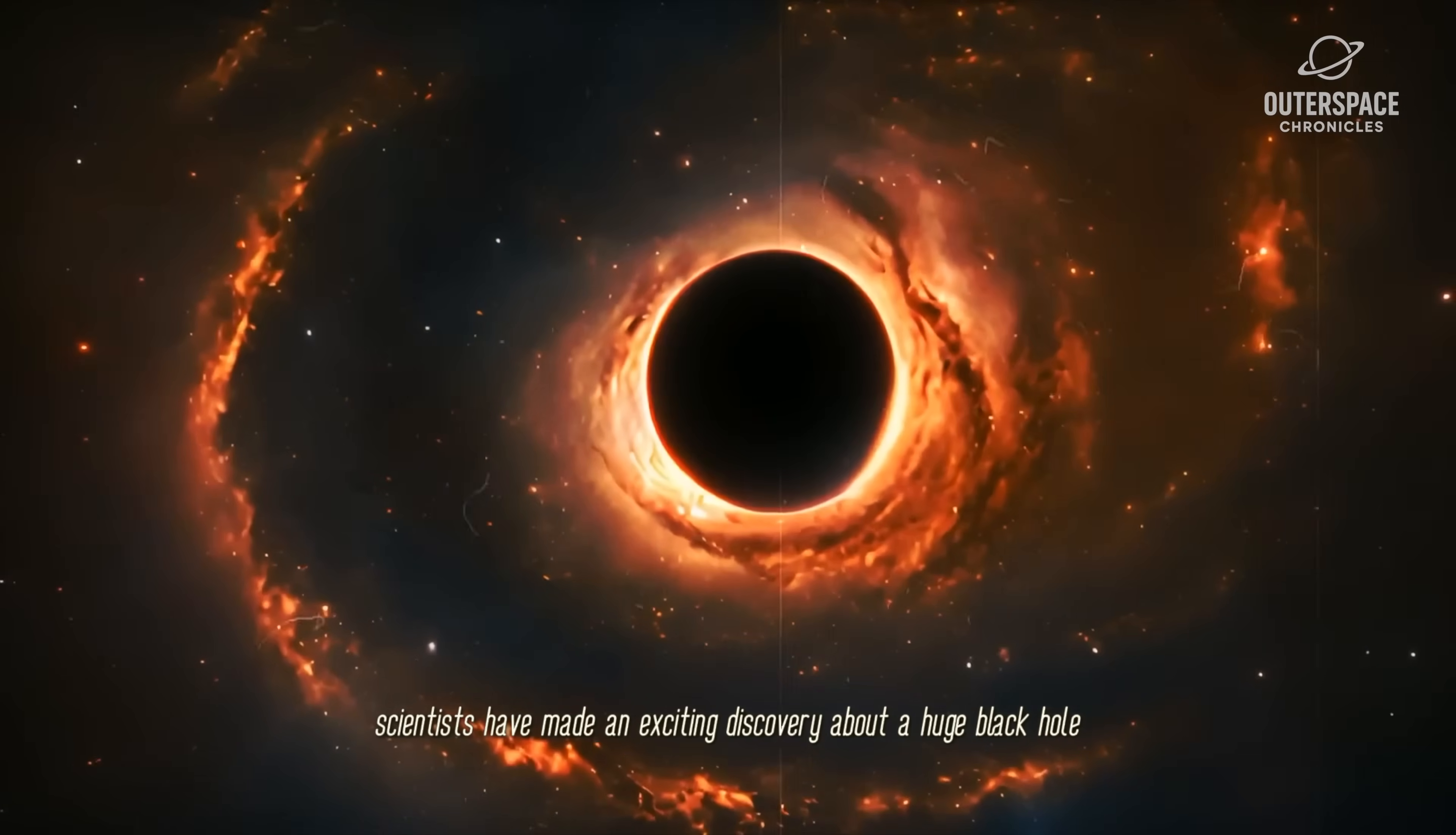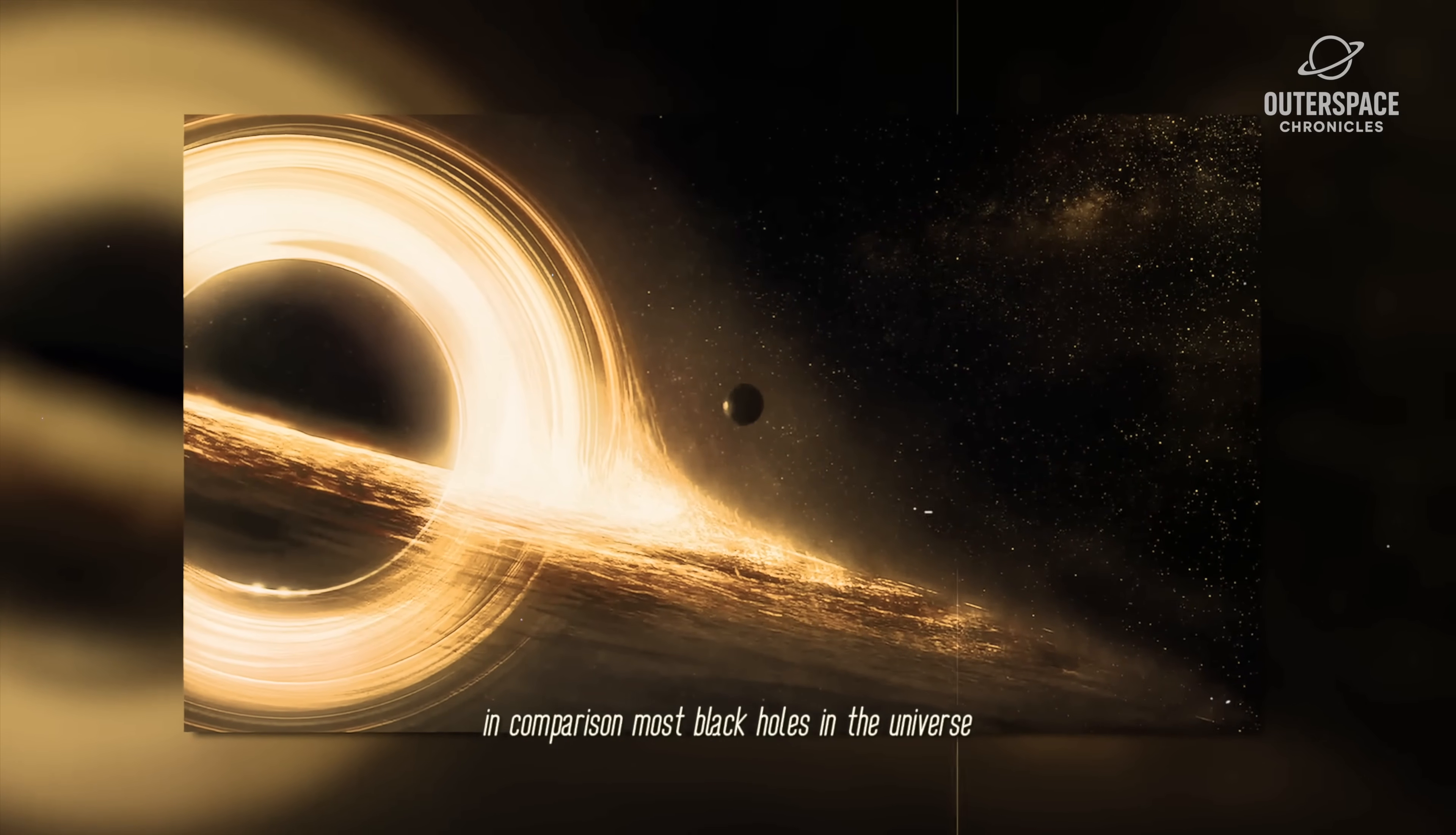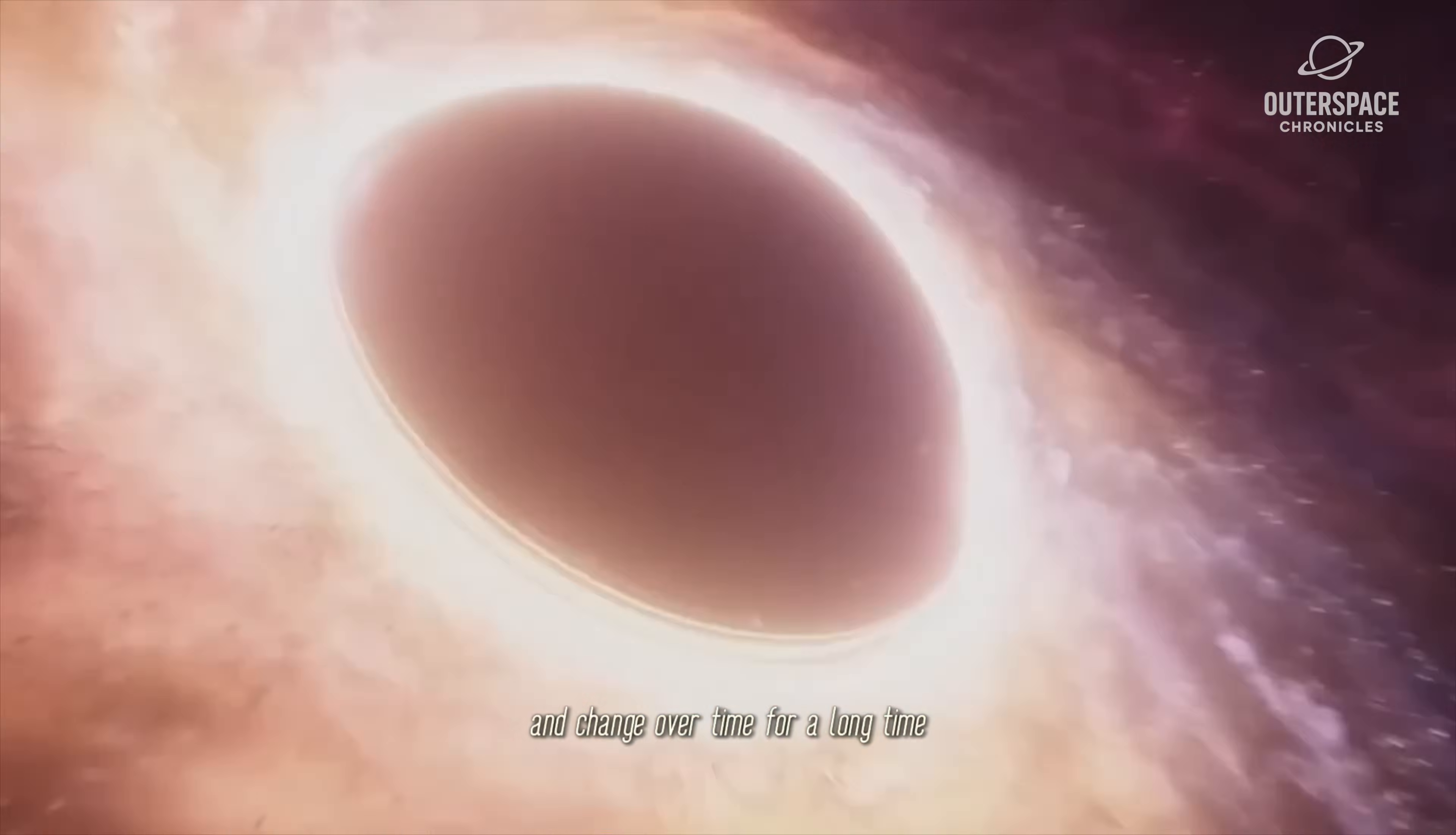Scientists have made an exciting discovery about a huge black hole located in a smaller galaxy that hasn't been studied much before. This black hole is extraordinary because it makes up about 40% of the total mass of its galaxy. In comparison, most black holes in the universe typically only account for about 0.1% of their galaxy's mass. This surprising finding is causing researchers to rethink long-held ideas about how black holes come into existence and change over time.